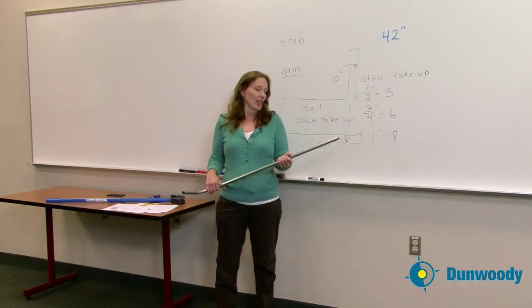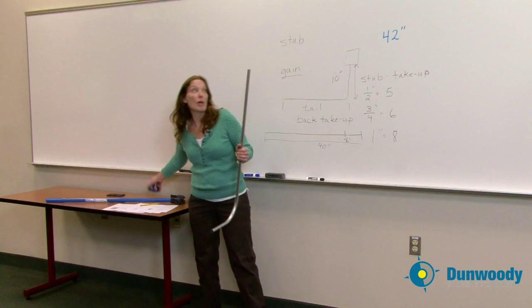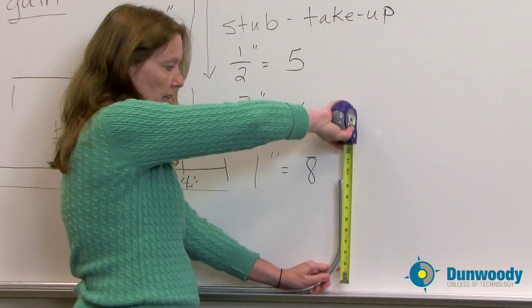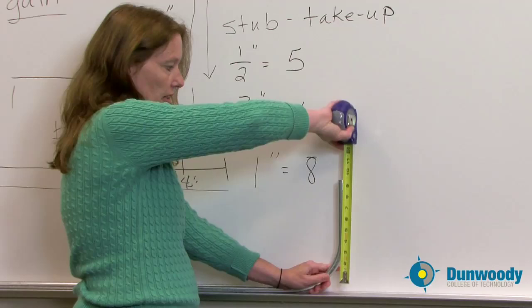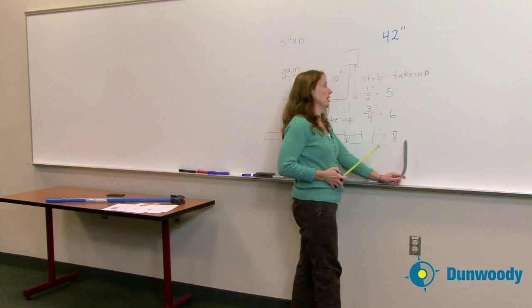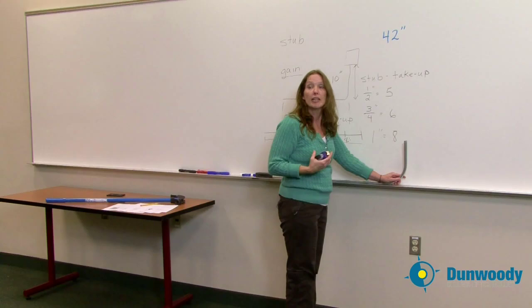Okay, now that we've done our bending and we have our 90 degree bend, let's measure it to see how much stub take up we got, back take up we got, and our gain. So if I measure my stub length here, and I see what I have here, I am sitting at almost 10 and a half inches. Now I said the normal stub take up, or the average stub take up is 5 inches. We are at 10 and a half. So we know that our particular bender has actually got a stub take up value of about 5 and a half, a little under.